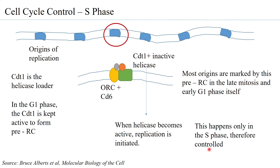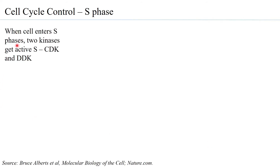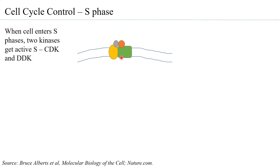We also need to keep in mind that there must be control ensuring replication initiates only once. When the cell enters S phase — allowed by G1/S cyclin-CDK at the checkpoint — S-CDK increases, and another kinase DDK also increases. What S-CDK and DDK do is act on the pre-replication complex that is already earmarking the origin.